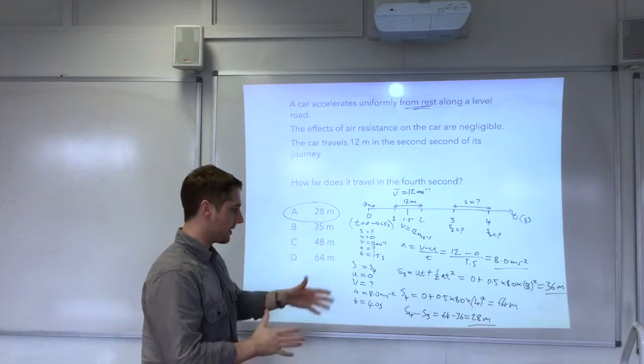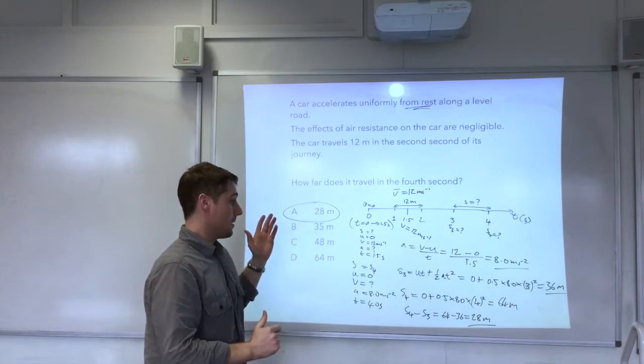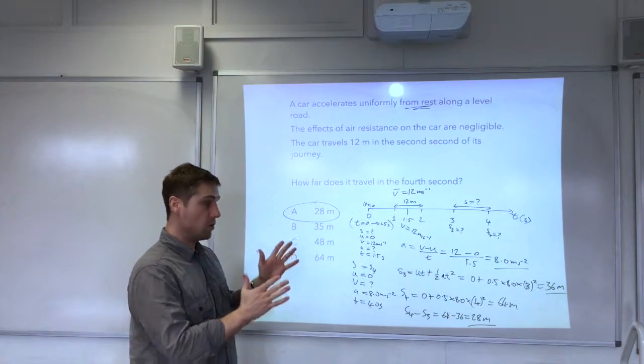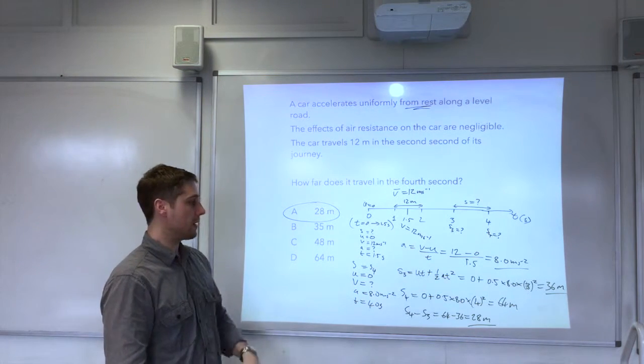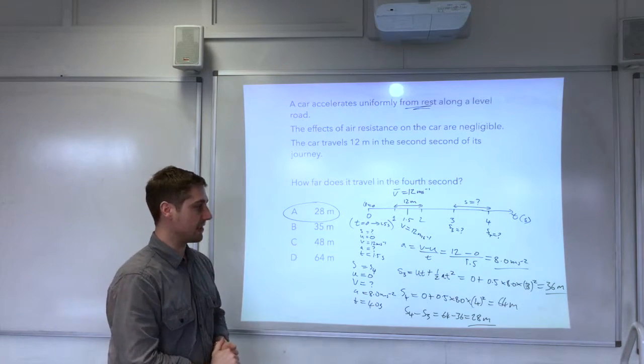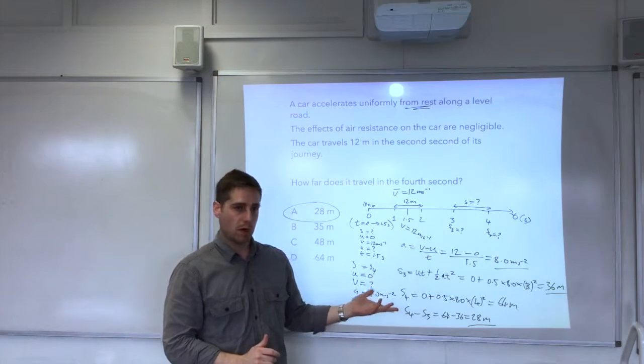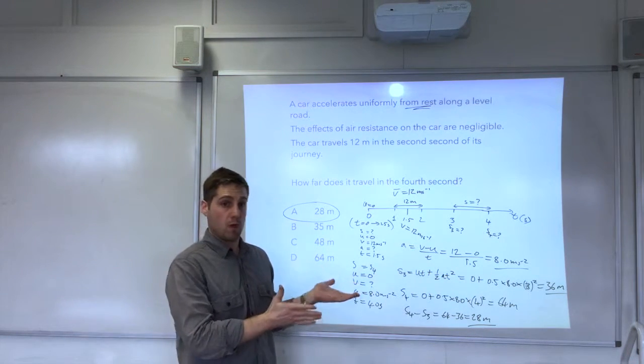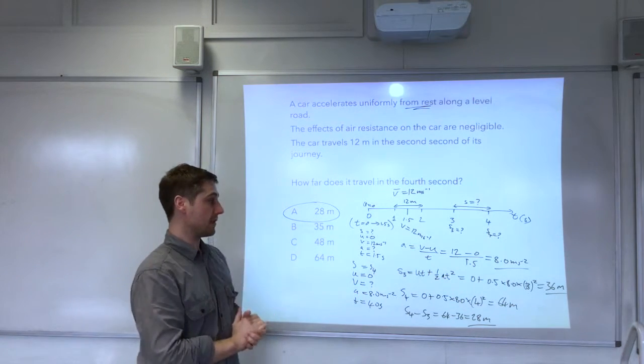The mark scheme doesn't provide any working, that's how I did it. I think if that was a standalone calculation question, not a multiple choice question, so if this was in section B basically, I reckon that would be worth 3 or 4 marks. There's quite a lot of work there. So I'm thinking there's quite likely a shortcut, but I don't know what it is.